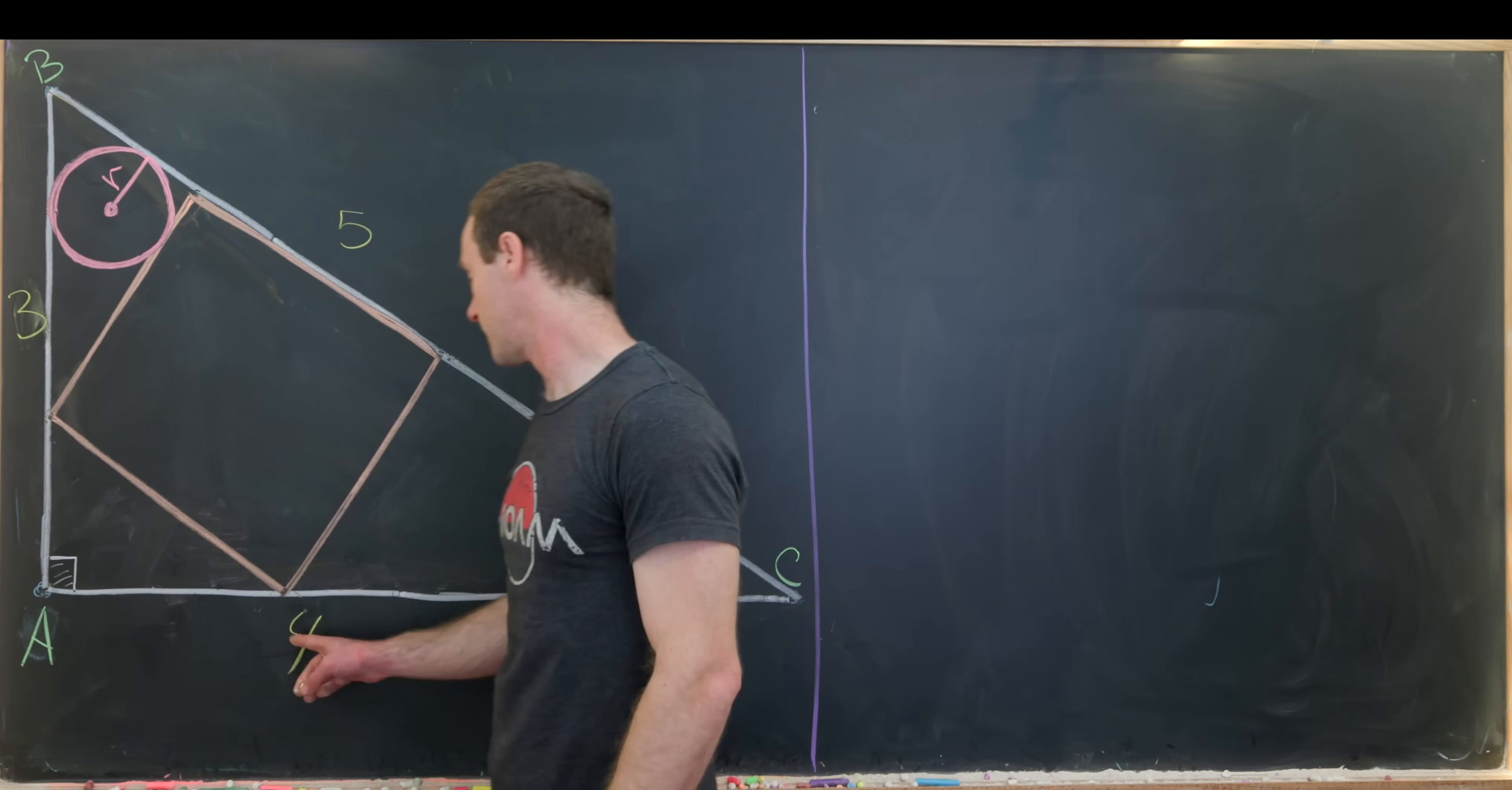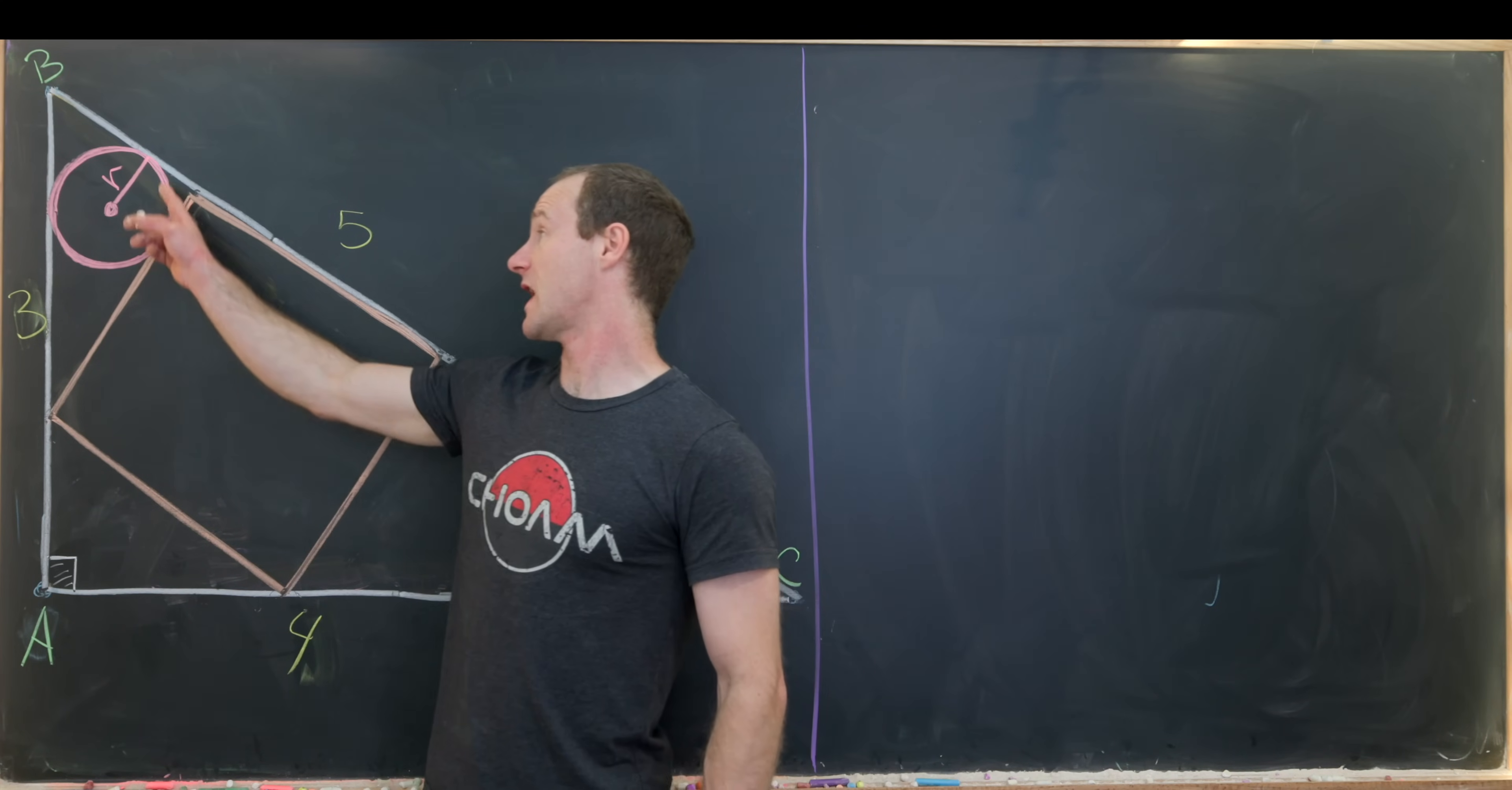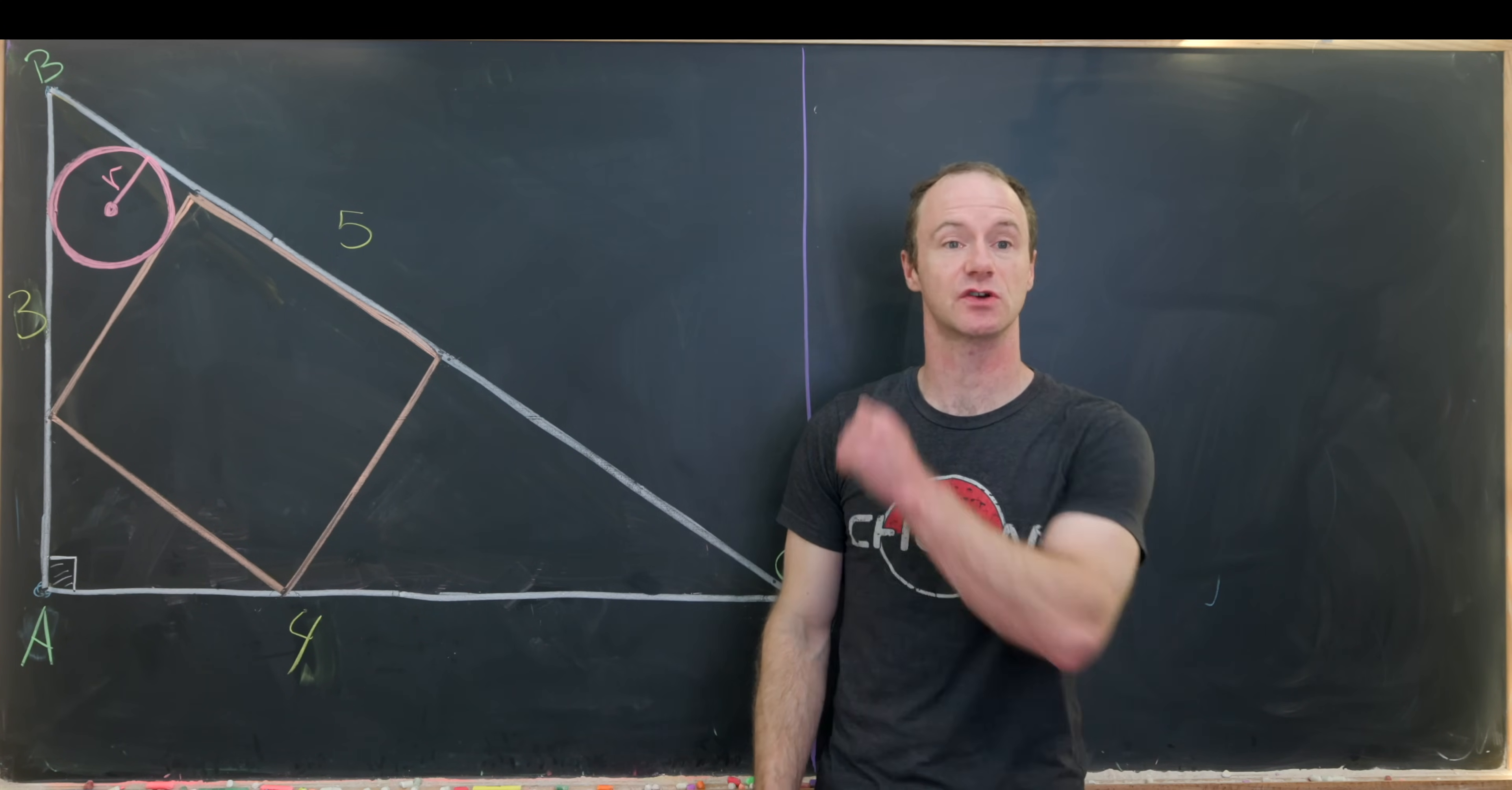Today I've got a really nice geometry problem. We're going to start with a 3-4-5 right triangle, which I've named with vertices A, B, and C. Inside that triangle, sharing an edge with the hypotenuse, I will inscribe a square. And then in the upper left of the triangle, between the square and the outside edges of the triangle, I'll inscribe a circle. Our final goal is to find the radius of this circle, but our path will be to first find the side length of this square.